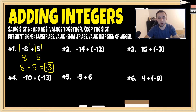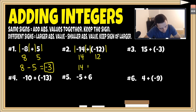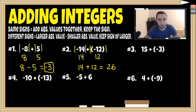For number two, we have negative 14 plus negative 12. They have the same signs — both negative — so we use the same signs rule. It tells us to add the absolute values together. The absolute value of negative 14 is 14, and the absolute value of negative 12 is 12. 14 plus 12 equals 26. We keep the sign, and since both numbers were negative, our final answer is negative 26.